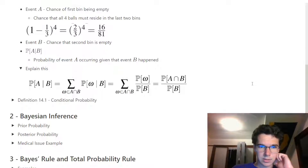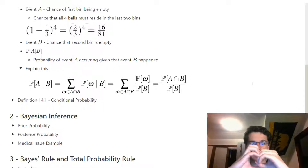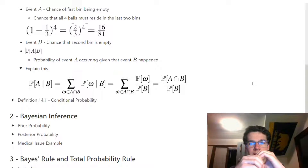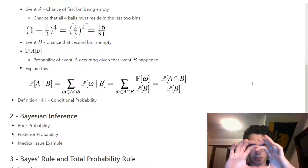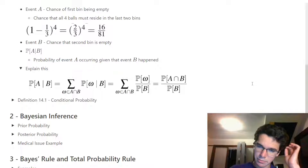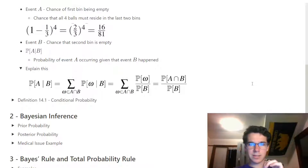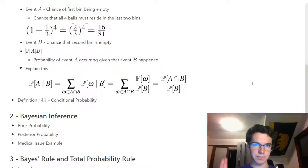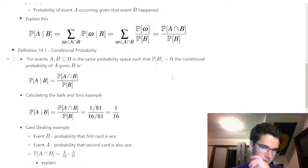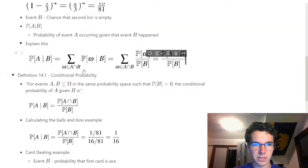Given B, it's going to be the sum of all the sample points in A, represented by taking each sample point's probability and dividing it by the probability of B and summing all of those up. This gives us an equation: the probability of A and B divided by the probability of B. If we think of a Venn diagram — if we take A intersect B and divide by B — it's the probability that A happened given that our sample space is now B.